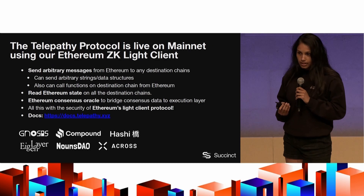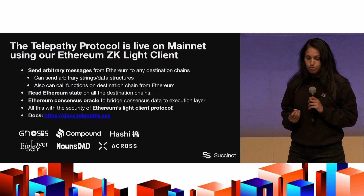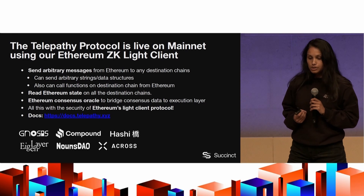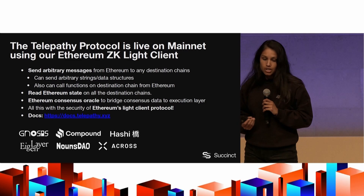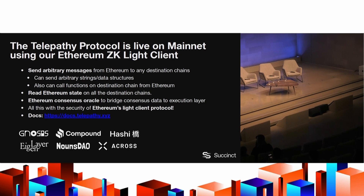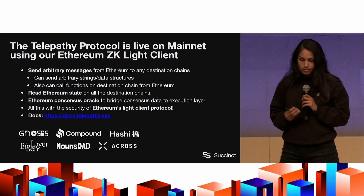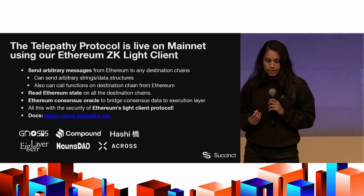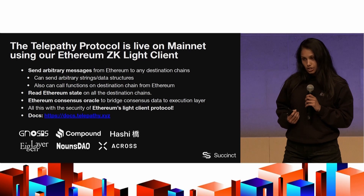The first ZK light client we built was a ZK light client for Ethereum. Our first protocol, Telepathy, which has been live on mainnet since March, uses our Ethereum ZK light client. With that, you can send arbitrary messages from Ethereum to any other chain, and you can also read Ethereum state on all destination chains because you have the Ethereum state root on those chains. It's also useful for bridging information from Ethereum's consensus layer to its execution layer.